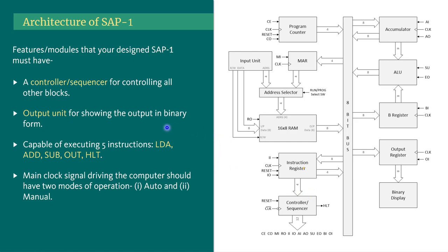Then for showing the output we will need an output unit. Our computer SAP-1 should be capable of executing five instructions: those are LDA, ADD, SUB, OUT, and HALT. All of these instructions will be discussed very soon.